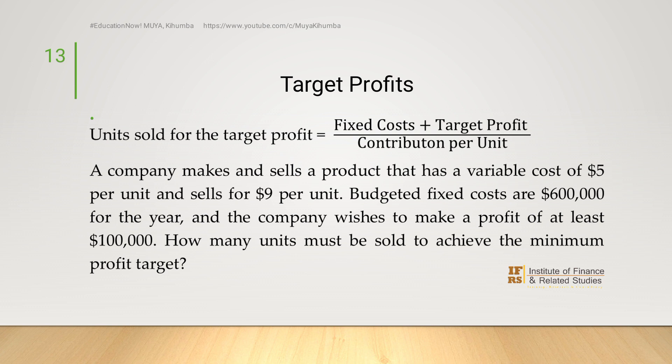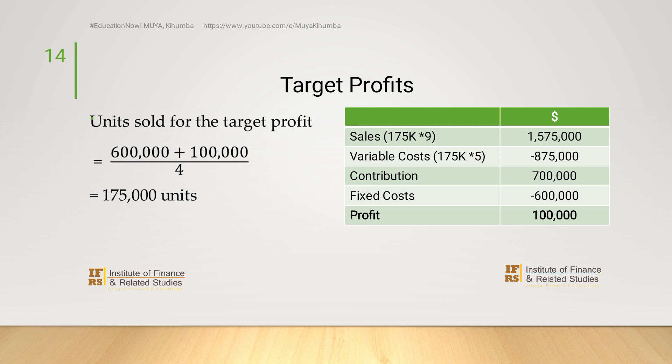Let us look at an illustration. A company makes and sells a product with a variable cost of $5 per unit and sells at $9 per unit. Budgeted fixed costs are $600,000 for the year, and the company wishes to make a profit of at least $100,000. How many units must be sold in order to achieve the minimum profit target? The contribution per unit is $4. We take fixed cost of $600,000, add the target profit of $100,000, and divide by contribution of $4, giving us 175,000 units.